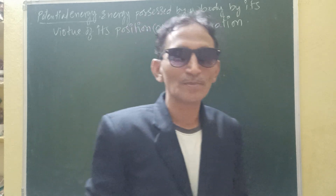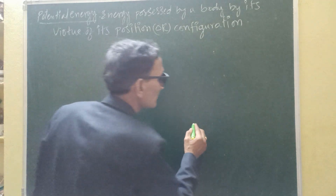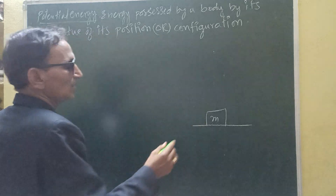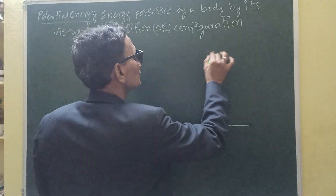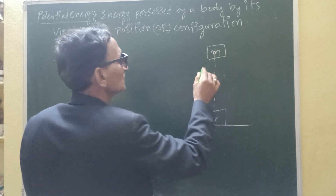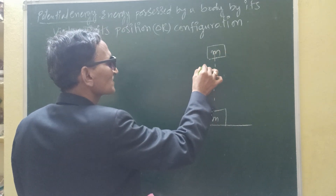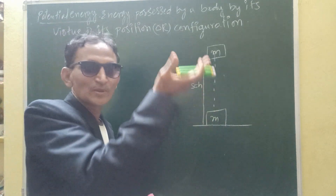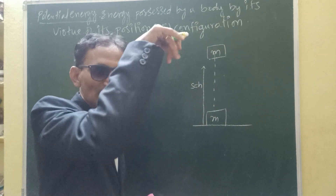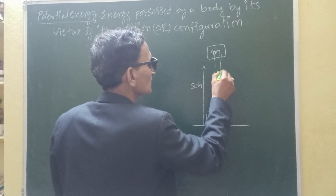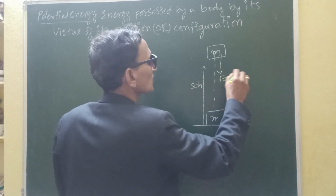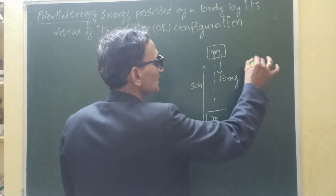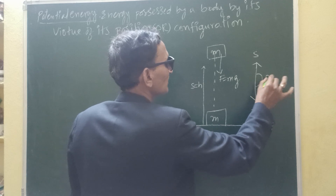Now let us see the proof of Potential Energy. Consider a body of mass m raised to a height h from the surface of the earth. The distance it has been raised from the surface, let us take that as S = h. Because of being raised, the force of gravity is acting in the downward direction — that is the weight of the body. Now the force is acting downward and the displacement raised is upward, so there exists an angle theta = 180 degrees.